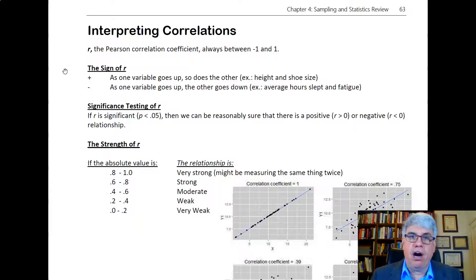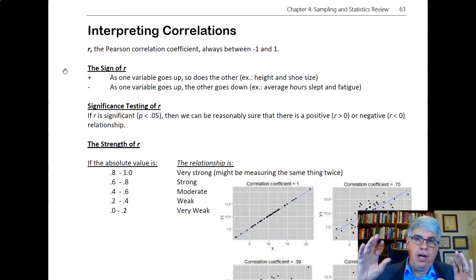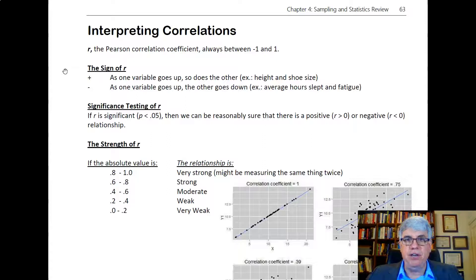If I say r equals 0.2 and it's significant, then I can be 95 percent sure that the real r, if we had tested everybody in the population, would have been greater than zero. It might not be exactly 0.2, but it would have been greater than zero because it's significant.